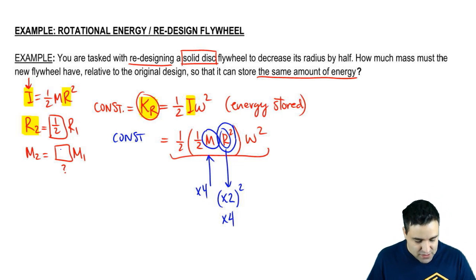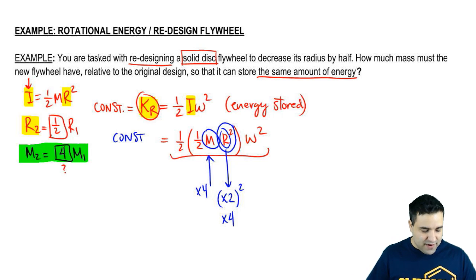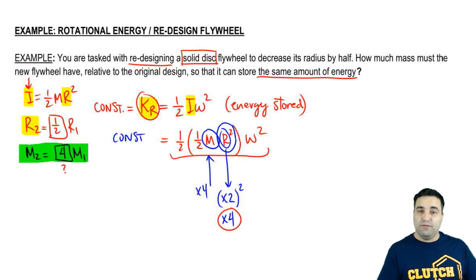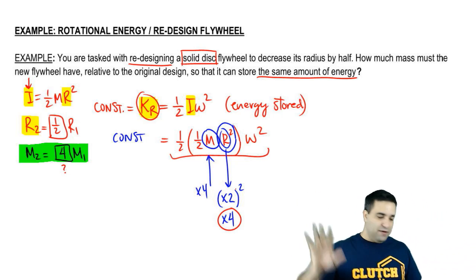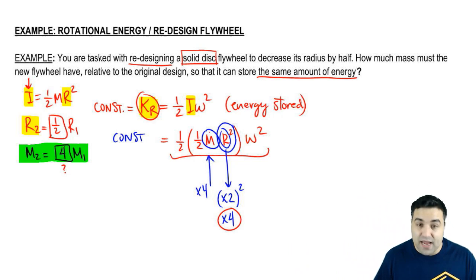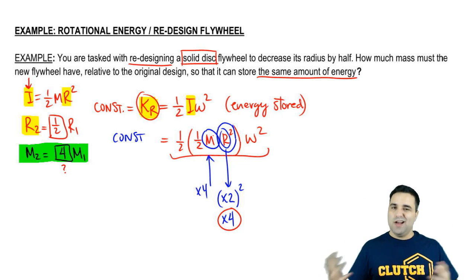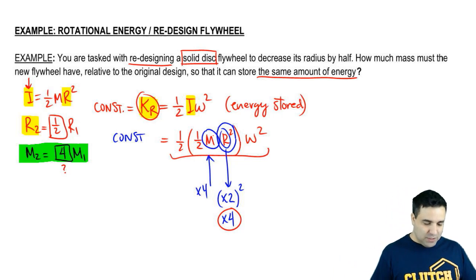So again, R decreases by the factor of 2, but then you have to square because there's a square here. You get a 4. If one variable decreases by 4, the other one has to increase by 4. Notice there are no squares in the M, so it's just a 4, not a 2, nothing crazy like that. That's it for this one. Let me know if you have any questions.